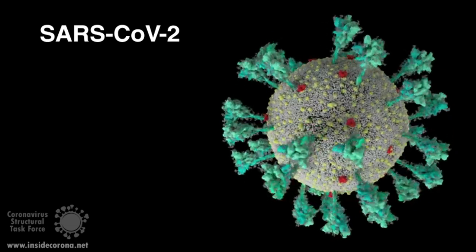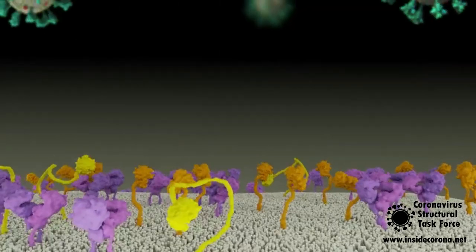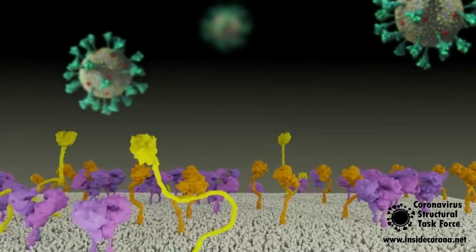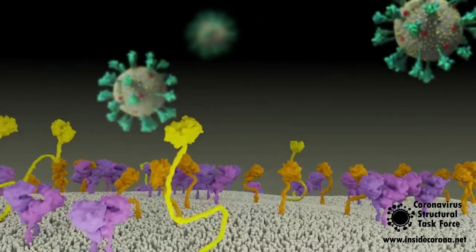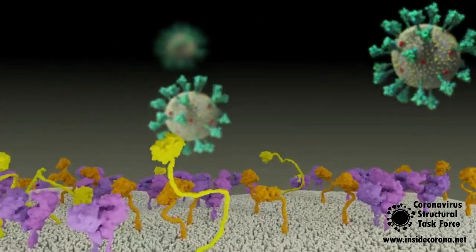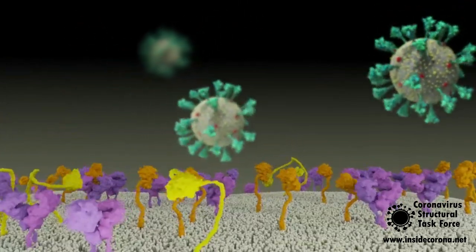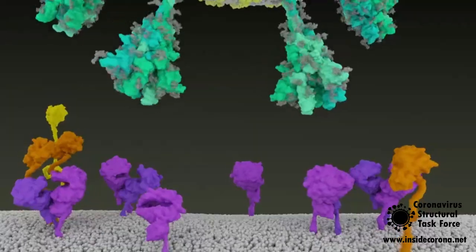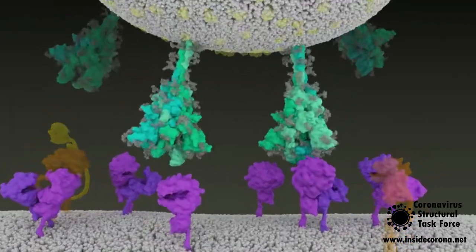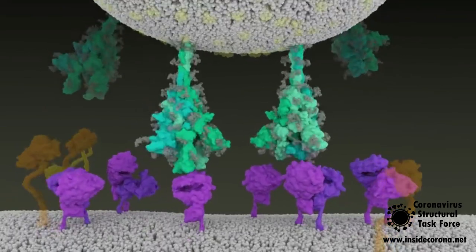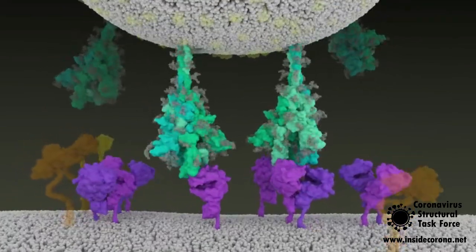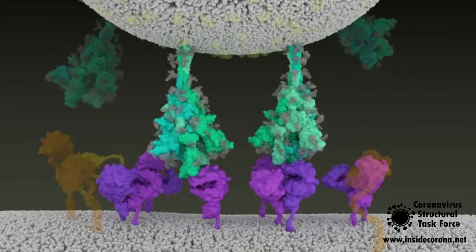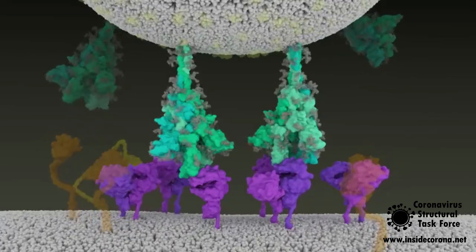An individual can be infected with SARS-CoV-2 after inhaling airborne viral particles. Upon entering the airways, the virus particles encounter respiratory epithelium cells in the trachea and lungs. The SARS-CoV-2 spike protein recognizes a membrane-bound protein on the surface of the cells known as ACE-2, shown here in purple.